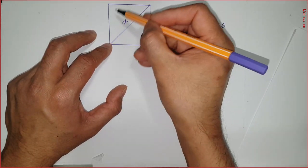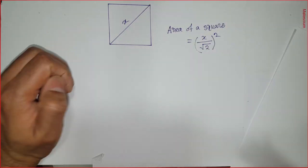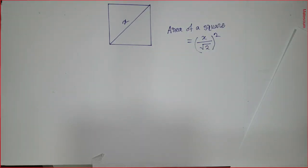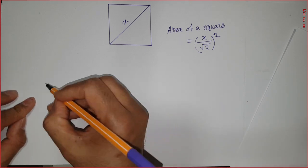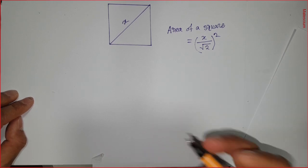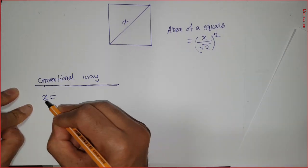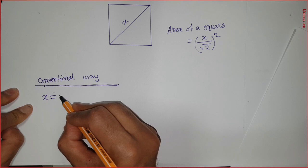But I have a very simplified way that can be used to calculate the total area of this square within 5 seconds. First let me show you an example according to the typical or conventional way. Let's say this diagonal length x equals 5.